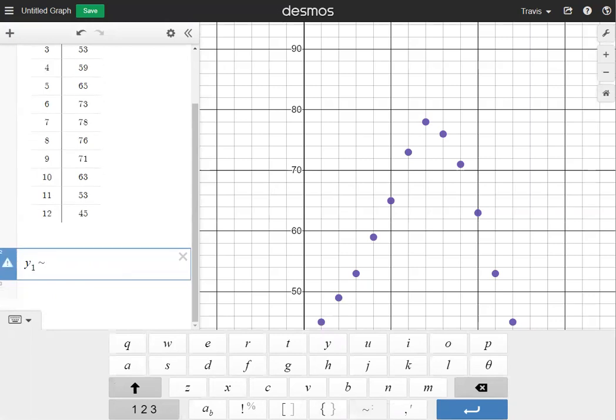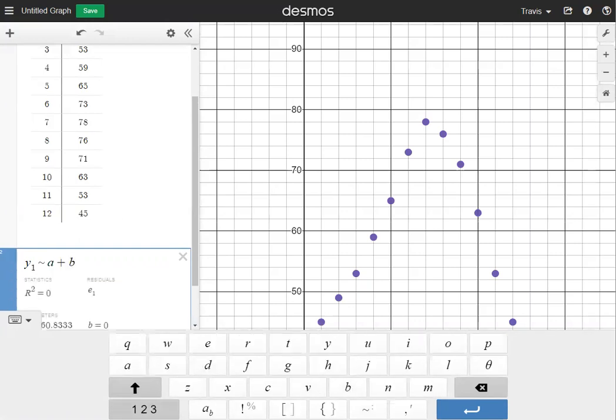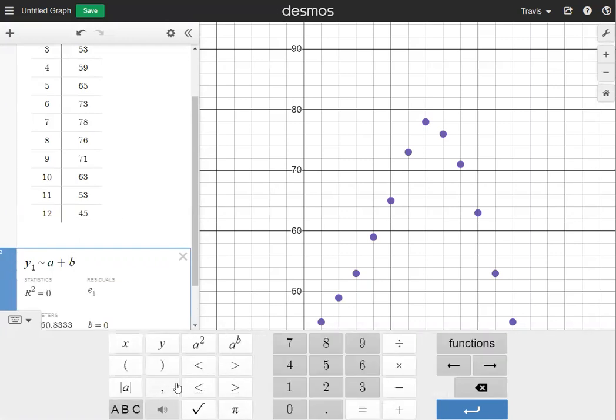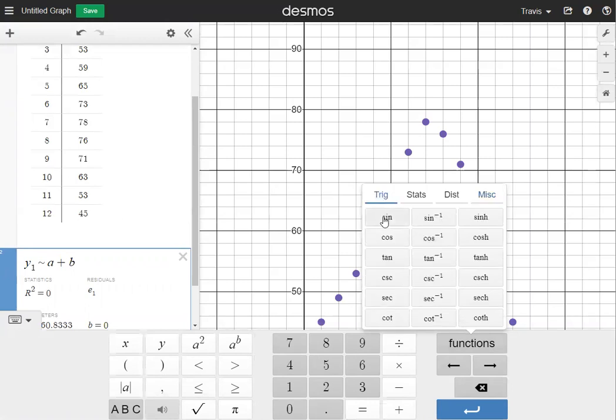The next thing that I need is I need to make my sign equation. So I'm going to be using A plus B. Now I need my sign function, so I'm going to go over to functions, click that, and then under trig, I'm going to choose sign at the top.